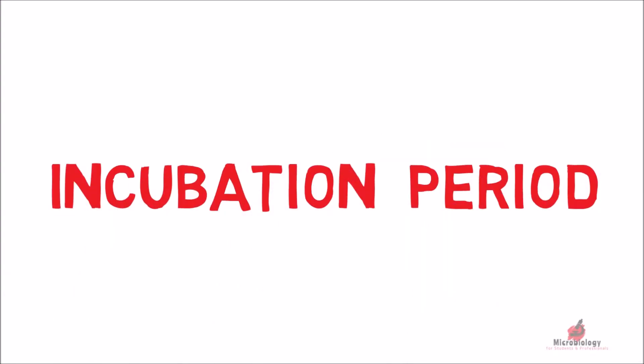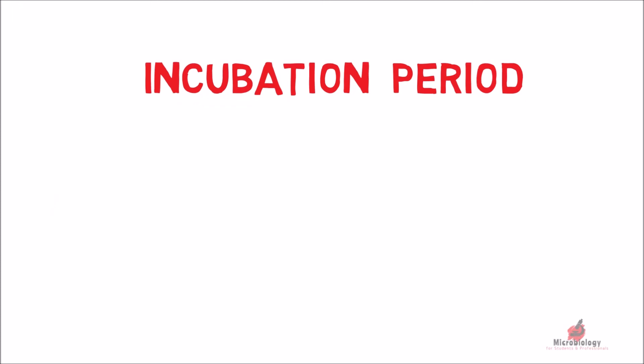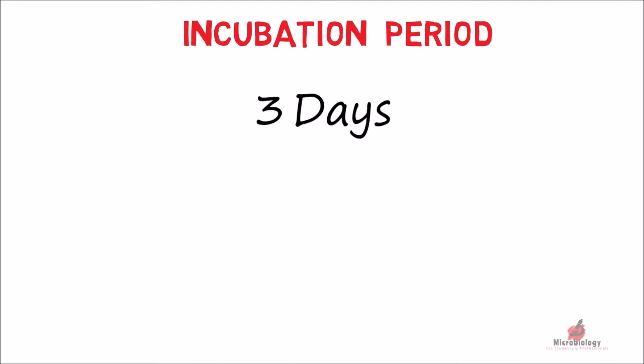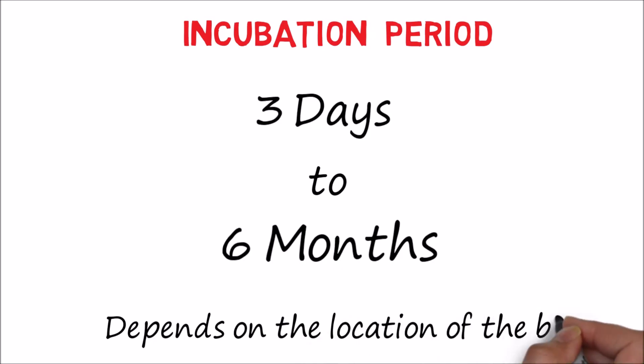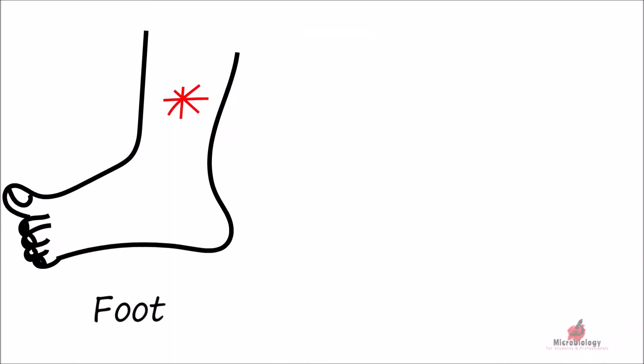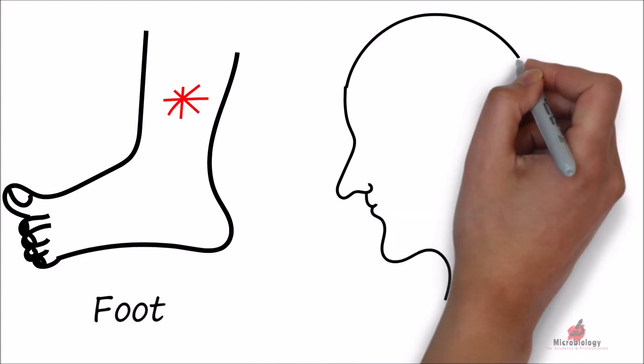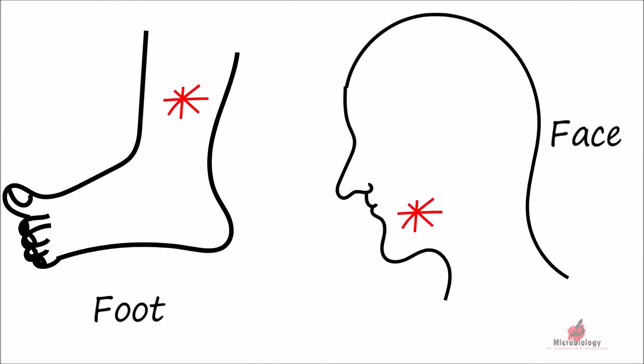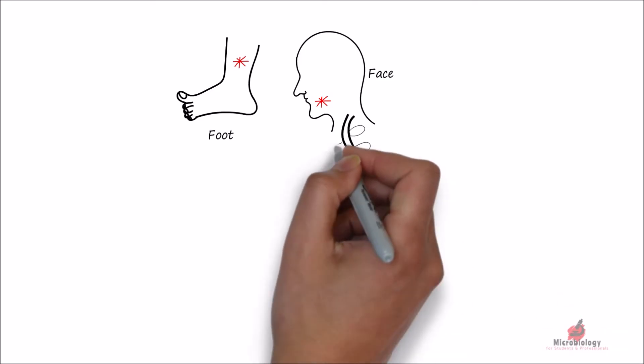The incubation period of rabies in humans is usually as short as three days and as lengthy as six months. It all depends on the location of the bite. A bite on the foot will have a longer incubation period than a bite on the face, as the virus has to travel along the nerve cells to the spinal cord and finally to reach the brain.